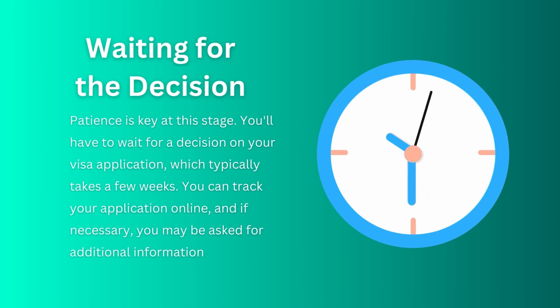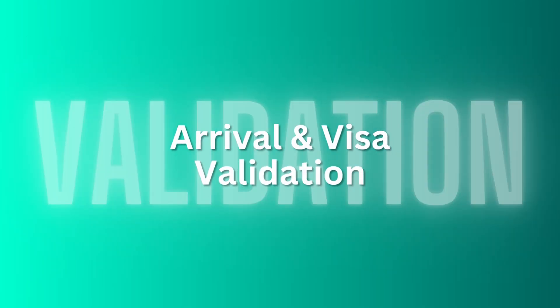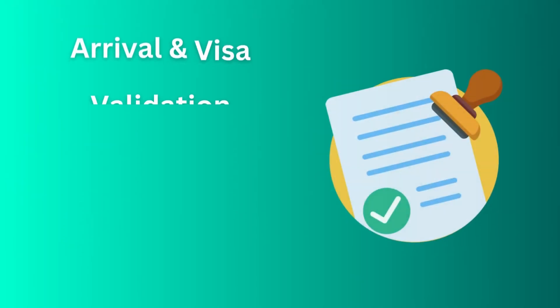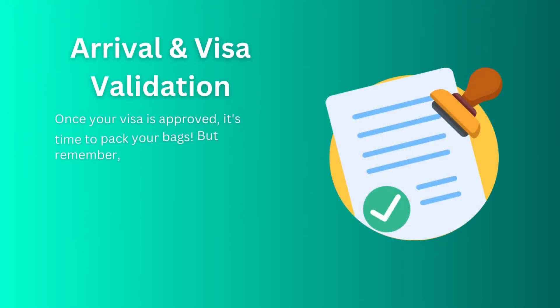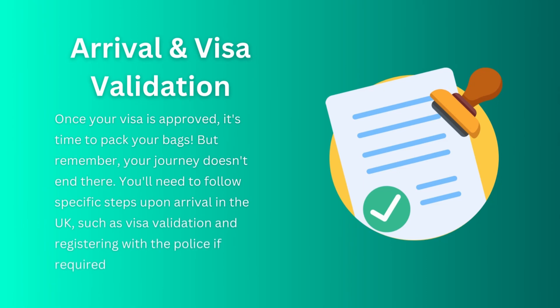If your visa is approved, you will move on to arrival and visa validation. Once your visa is approved, it's time to pack your bags, but your journey doesn't end there. You will need to follow specific steps upon arrival in the UK, such as visa validation and registering with the police if required. This is a crucial step that a lot of candidates overlook.